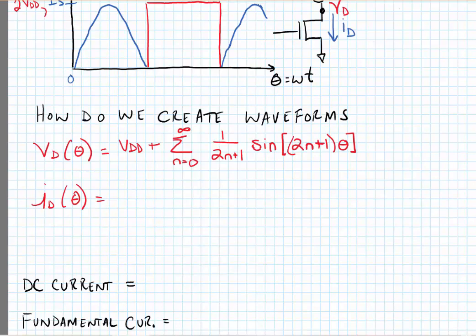by the DC component VDD plus the sum from n equals 0 to infinity of 1/(2n+1) times sin[(2n+1)θ]. In other words, the sum of all the odd harmonics of the waveform.